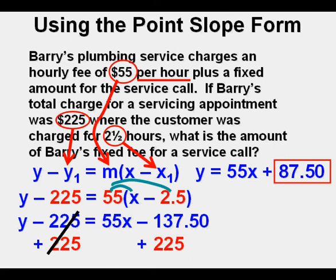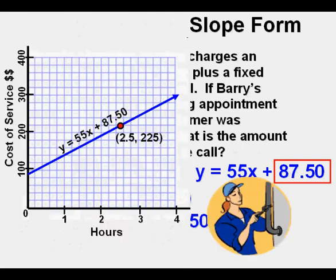$87.50 in coordinate grid algebra language. What do we call this number? 87.5. It's the y-intercept. And here it is. The equation for Barry's business is shown in the graph.